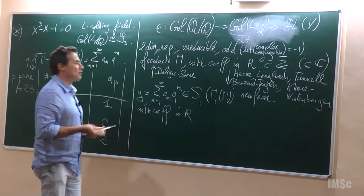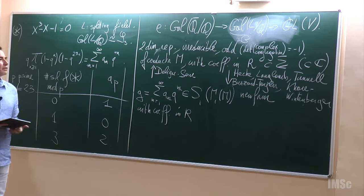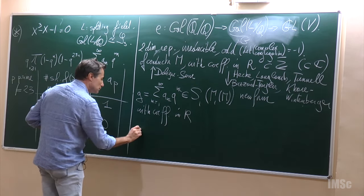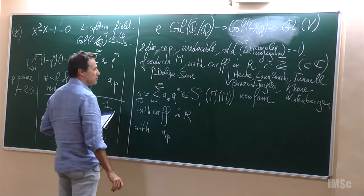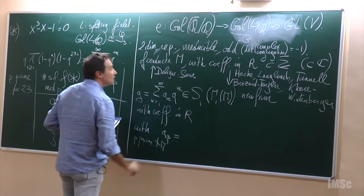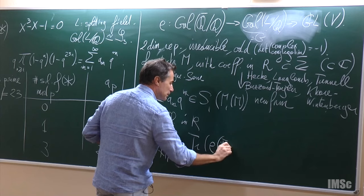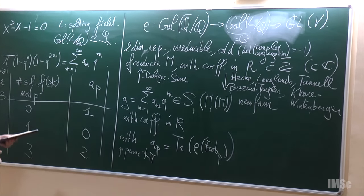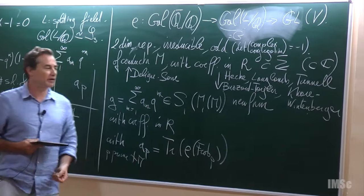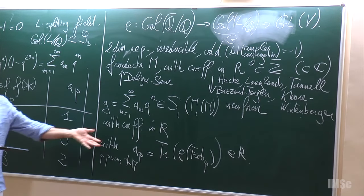The other direction is due to a number of people: Hecke, Langlands, Tunnel, Buzzard-Taylor, and finally Khare-Wintenberger, who actually proved the long-standing conjecture that you have a bijective correspondence. The correspondence satisfies: for p prime not dividing N, AP is the trace of ρ(Frob_p), which belongs to R, and you've got this identity for all p.